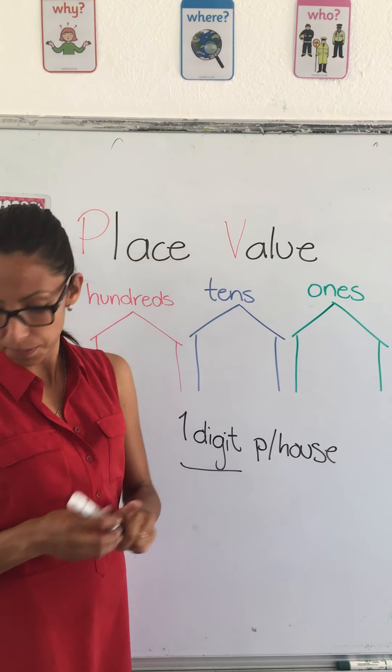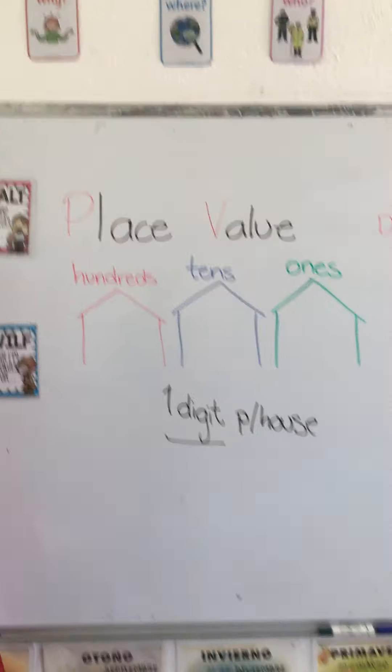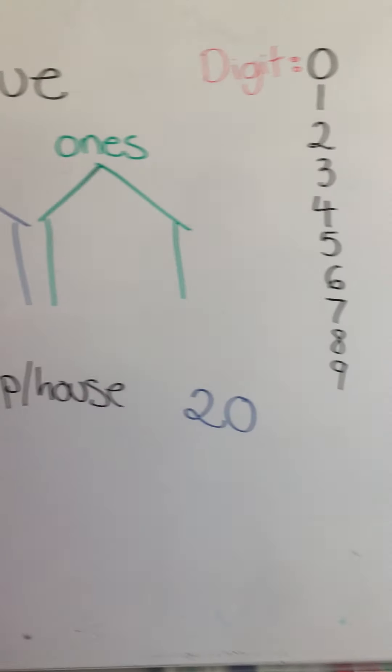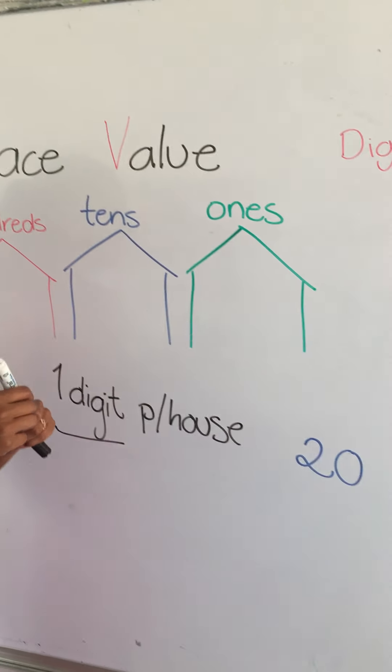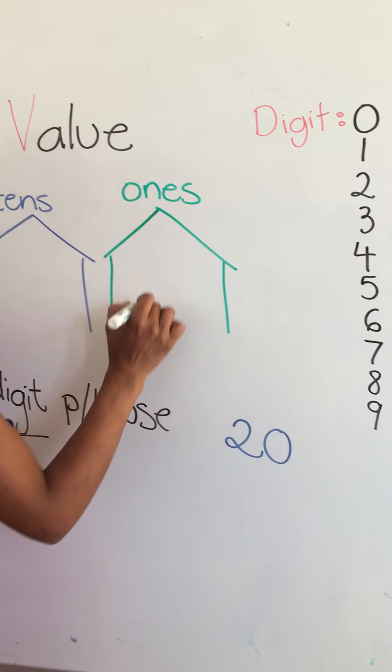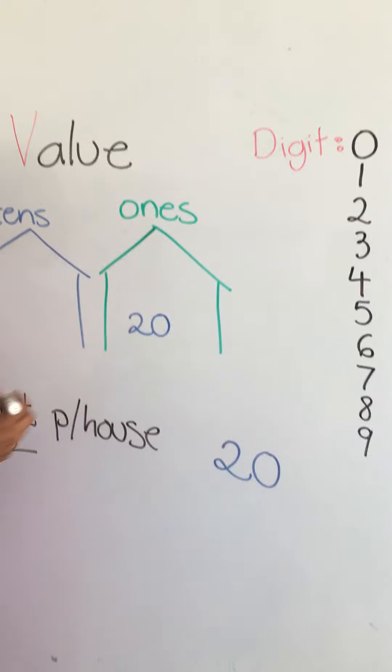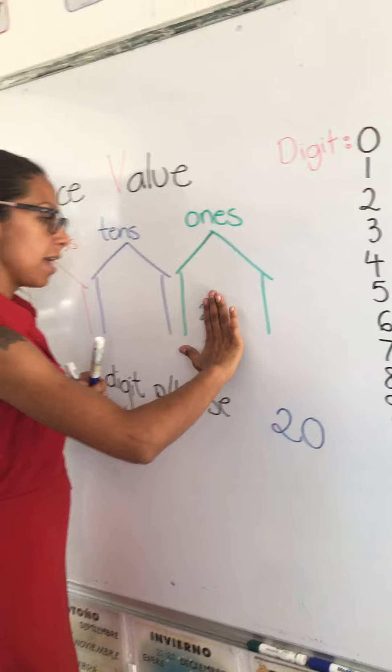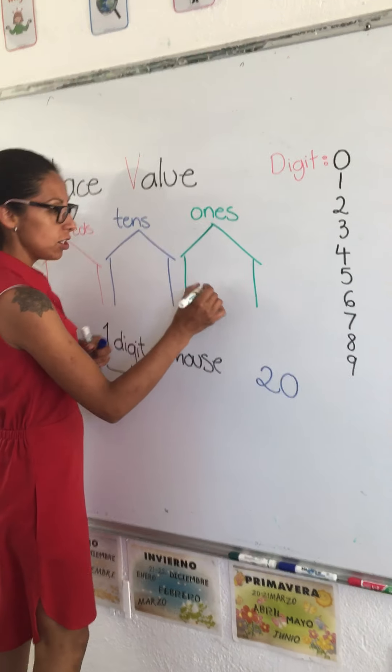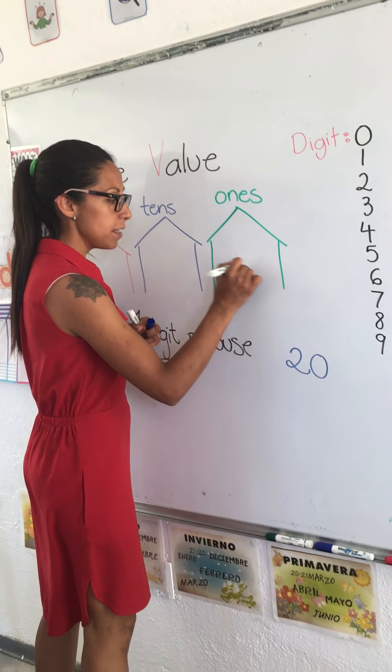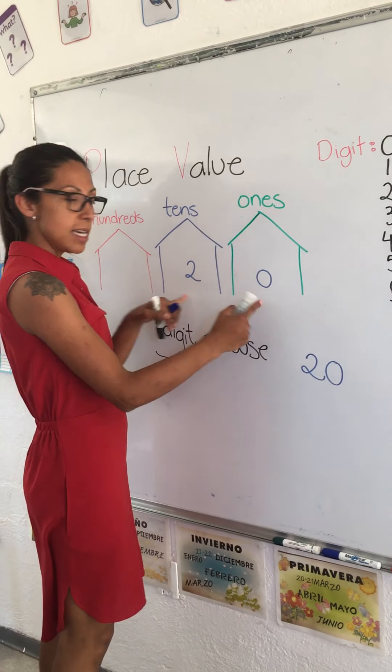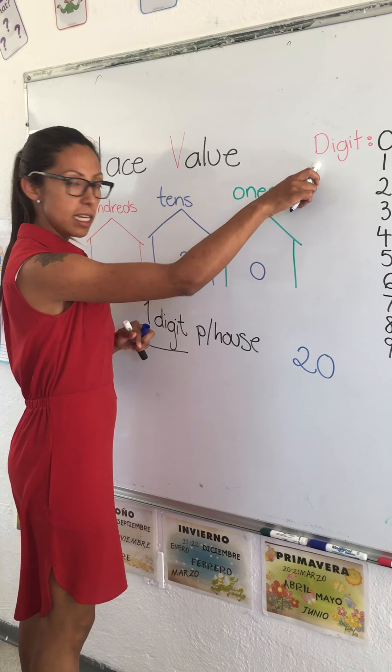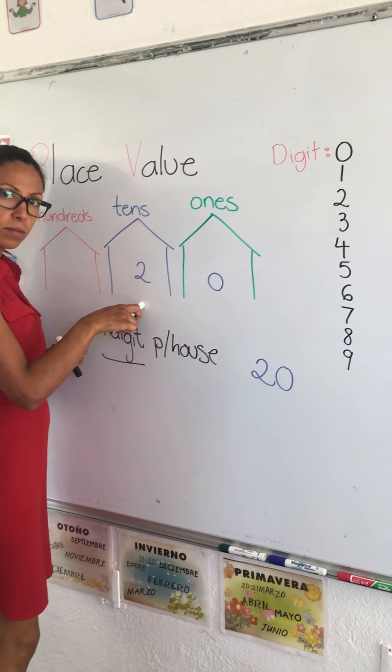So we're gonna have ones, tens, and hundreds. Let's say that we have this number, number 20. Can number 20 fit in the ones house? No, because it has two digits and the rule is only to have one digit. So we would have zero here and two here. This is still number 20, but there is just one digit in each house.